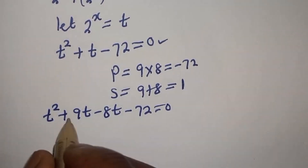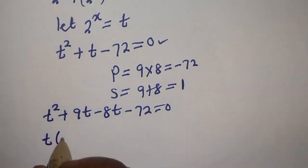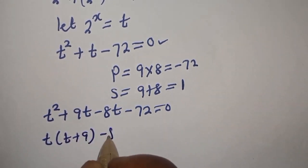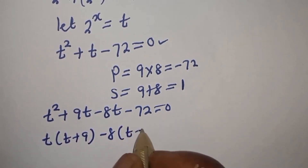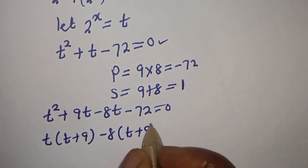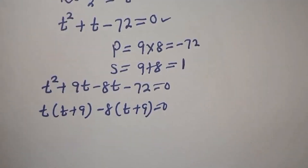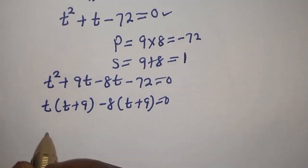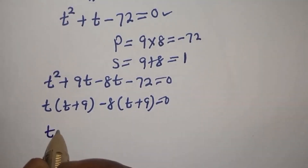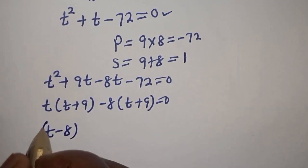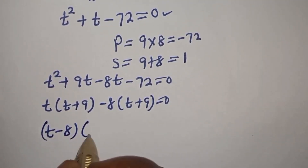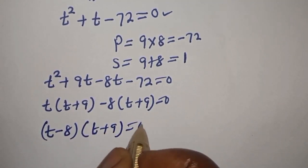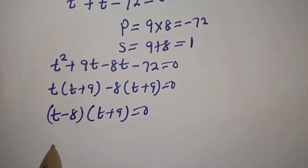t is common here: t bracket t plus 9, minus 8 bracket t plus 9, is equal to 0. Then, t plus 9 is common, giving t minus 8, bracket t plus 9, is equal to 0. There are two cases here.